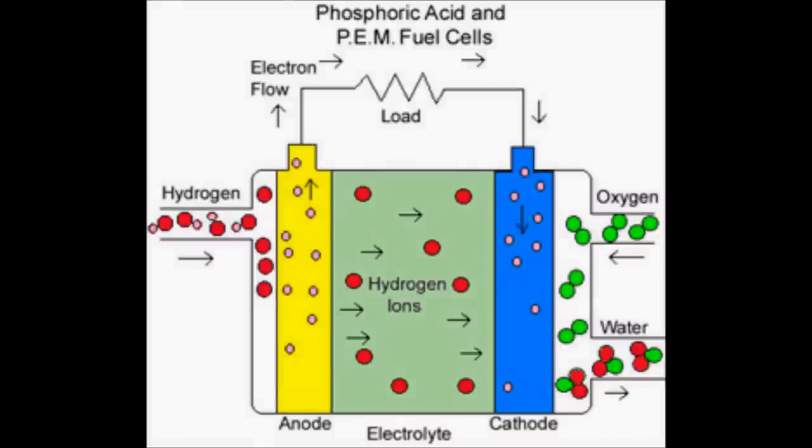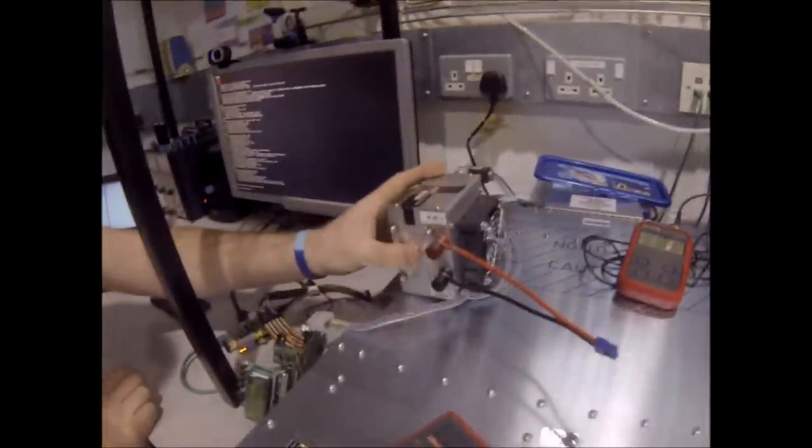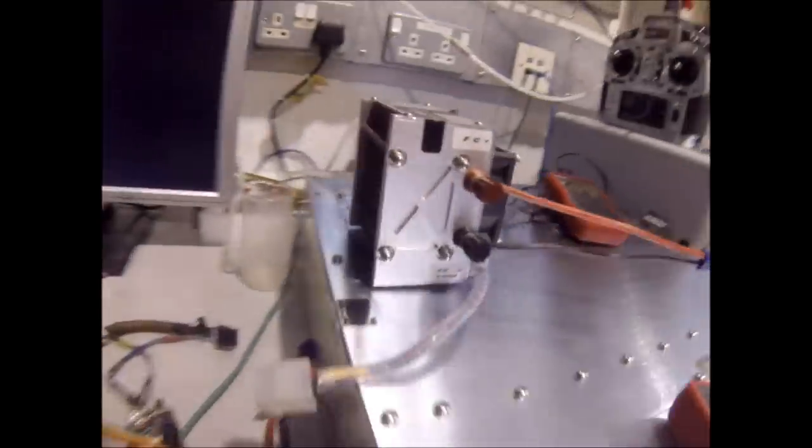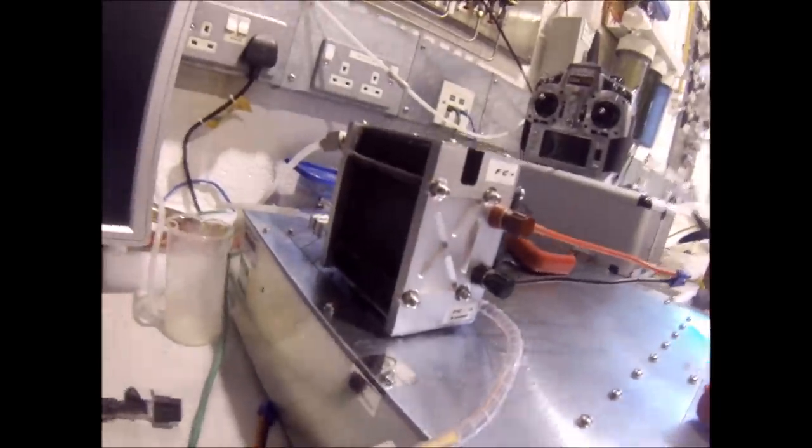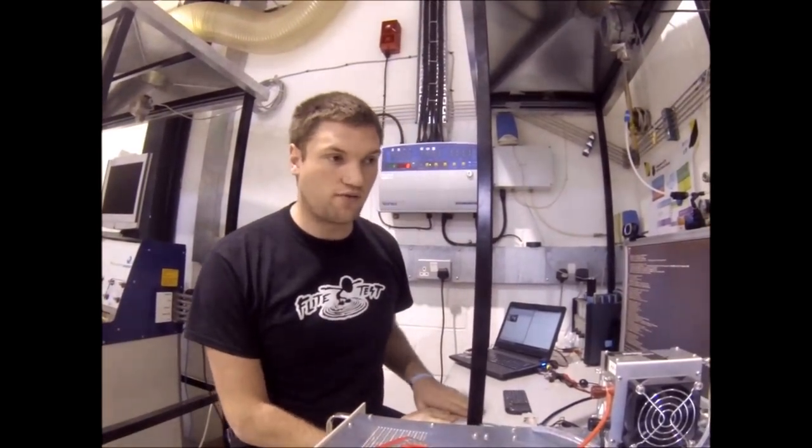So first of all, what's a fuel cell? A fuel cell is a device, in this instance, that converts hydrogen into electricity, quite simply. Water and heat are other by-products as well. As you can see, we have the fuel cell here. It's not particularly heavy, weighs less than a kilo. It's 24 cells and it's rated at 100 watts. It's the Horizon H100 fuel cell.